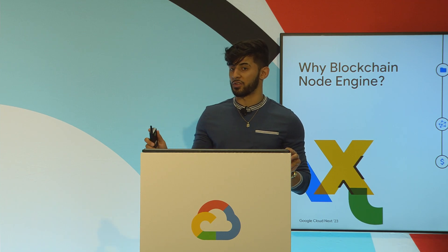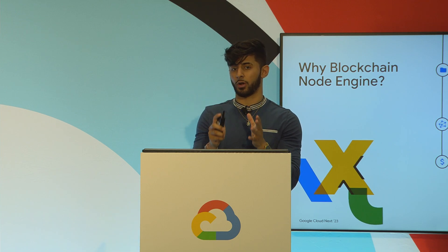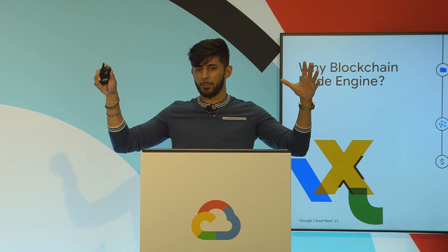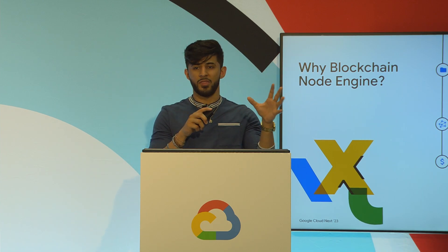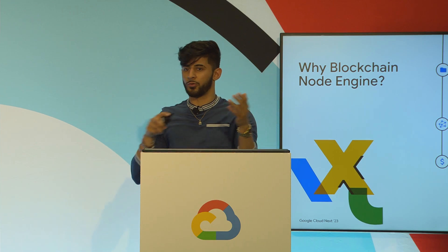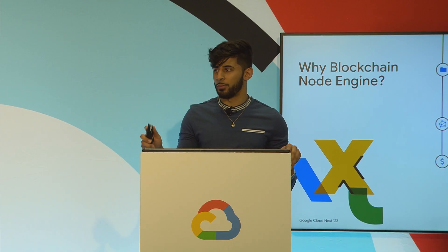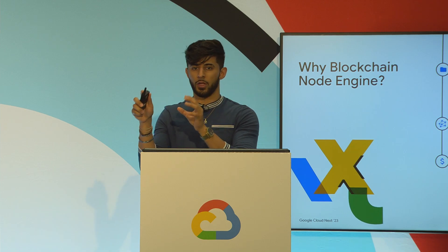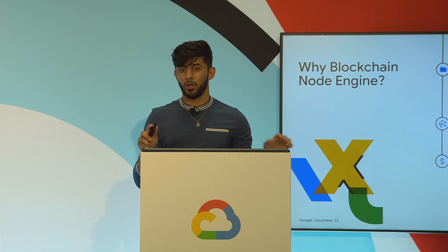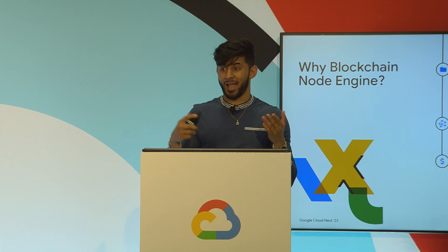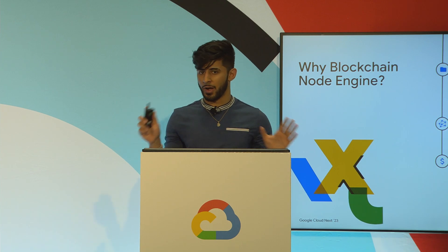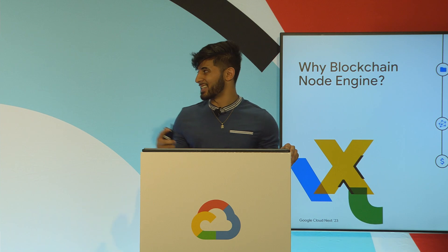Not only could Google provide that, but they could also provision a node dedicated just for us. A lot of different providers in the space give you an API with a load balancer on top of a fleet of nodes. But as you know, blockchains are asynchronous distributed systems and not every node has the same perspective on the chain — they might believe one state is different than the other. You might get requests to different nodes that believe in different states, so your API isn't idempotent and you don't get back the same response every time, which makes for a horrible customer experience. Google gave us one dedicated node where the response would be the same every time — super reliable and really easy to use.